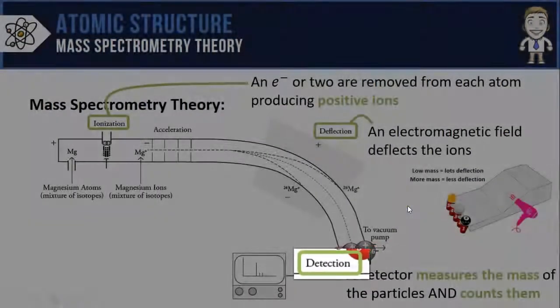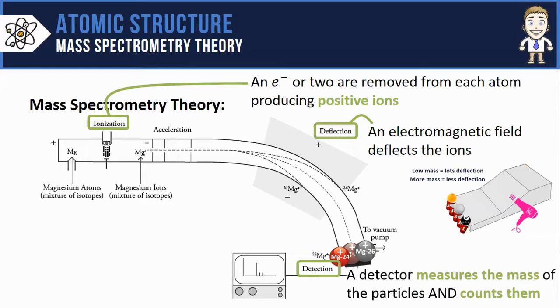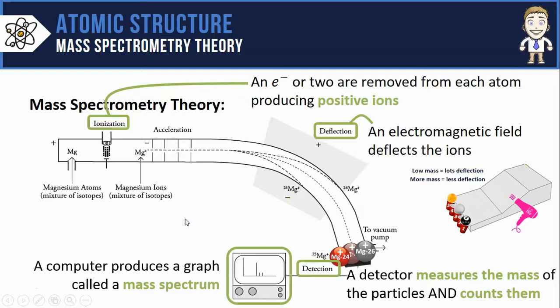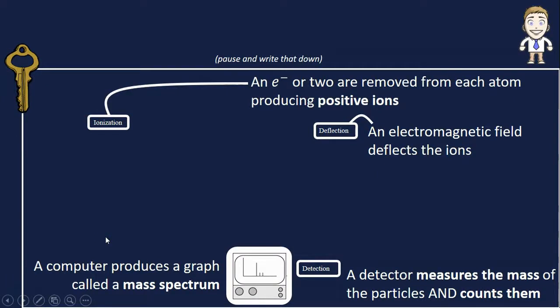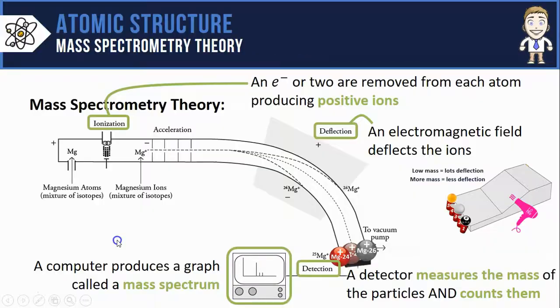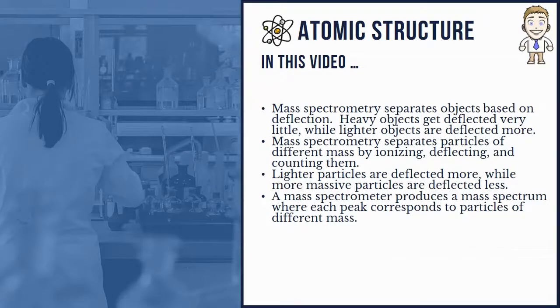At the end of the process, we simply need a detector that measures the mass of these particles and counts them so I can see how many of each type we had. That data goes into a computer which produces a graph called a mass spectrum. The main steps of this process are ionization, deflection, and detection, and that's the theory behind mass spectrometry. Here's a brief summary of what you saw in this video. Thanks for watching.